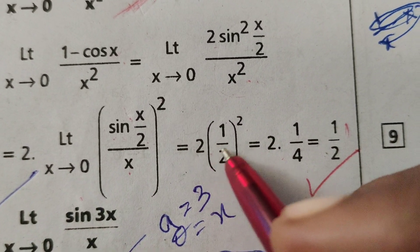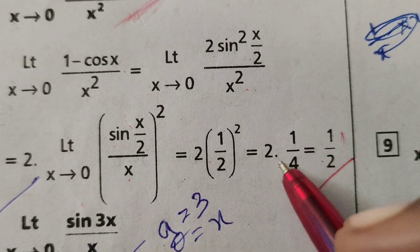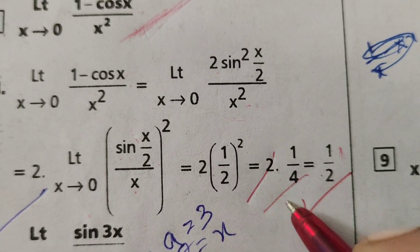2 write as it is, 2 into 1 by 2 whole square, that is 2 into 1 by 4. 4, here, 2, 2, 4.